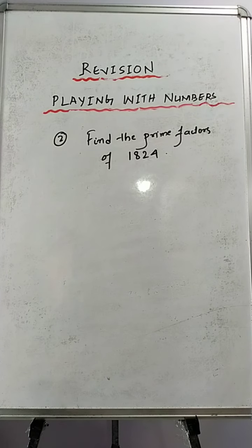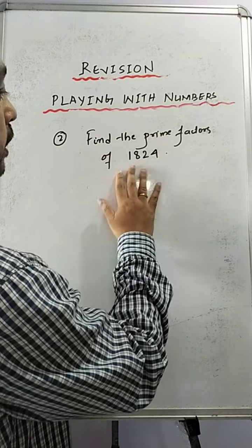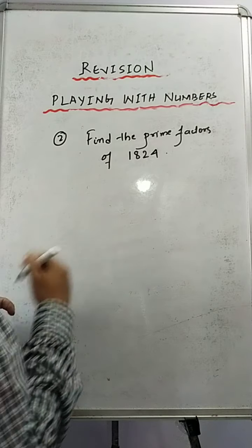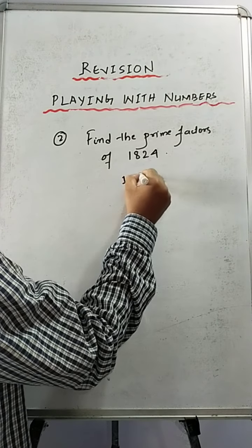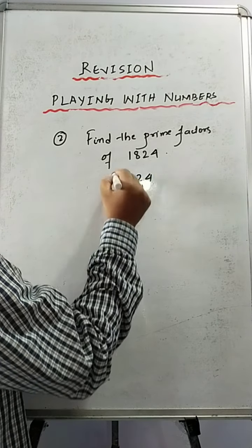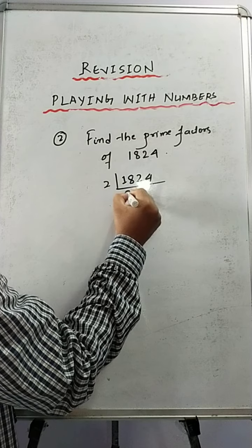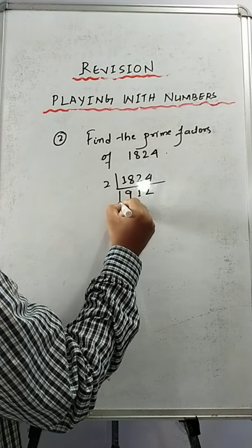The second sum is we'll have to find the prime factors of 1824. Same way we have to do the prime factorization. So 1824 is divisible by 2.